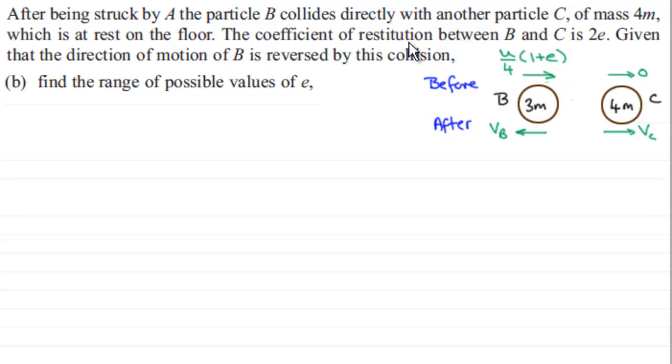And the coefficient of restitution between B and C is 2E. Given that the direction of motion of B is reversed by the collision, we've got to find the range of possible values of E.